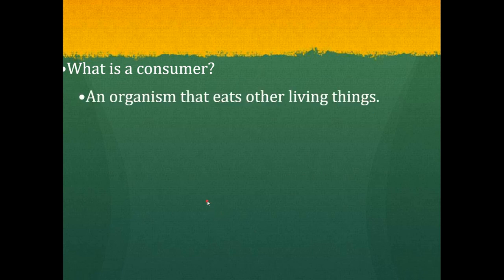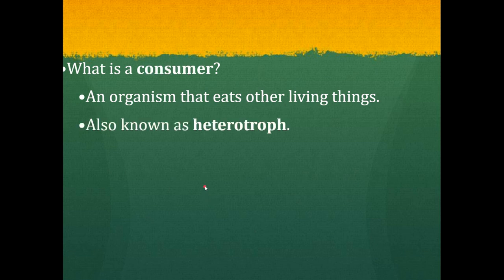Consumers are organisms that eat other things for food. Consumers are also known as heterotrophs. Autotrophs — the word 'auto' meaning self, 'troph' meaning feeding — are self-feeding; they make their own food. Heterotrophs, 'hetero' meaning different, have to go and get food in order to obtain energy. Examples of consumers would be any type of animal: rabbit, human, fish, anything like that.